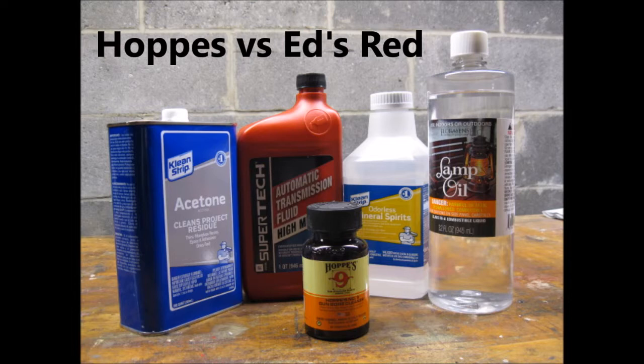In this video, I'm going to compare Hoppe's number 9 to Ed's Red. Ed's Red is a popular home brew powder solvent made up of equal parts acetone, automatic transmission fluid, mineral spirits, and kerosene. I will be using lamp oil as my kerosene.